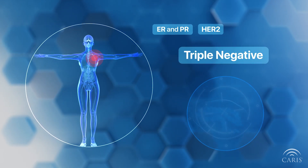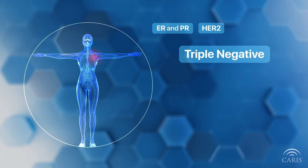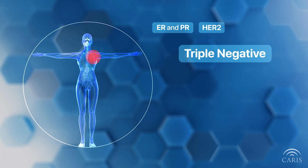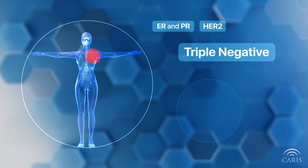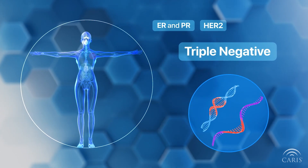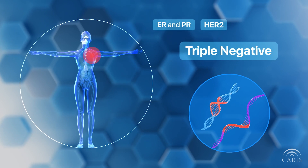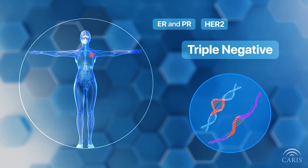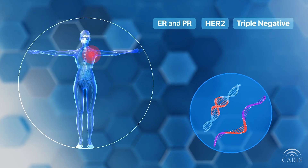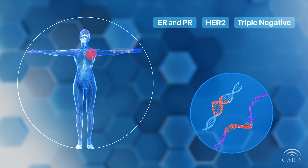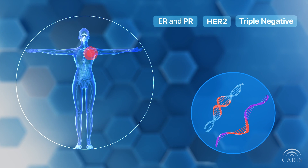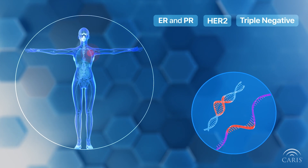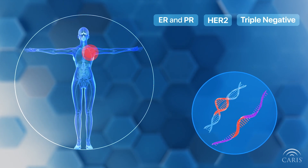Finally, triple-negative breast cancer indicates the absence of ER/PR and HER2 on the tumor. These tumors benefit from additional molecular testing, like DNA and RNA sequencing, to identify other biomarkers to guide therapy.